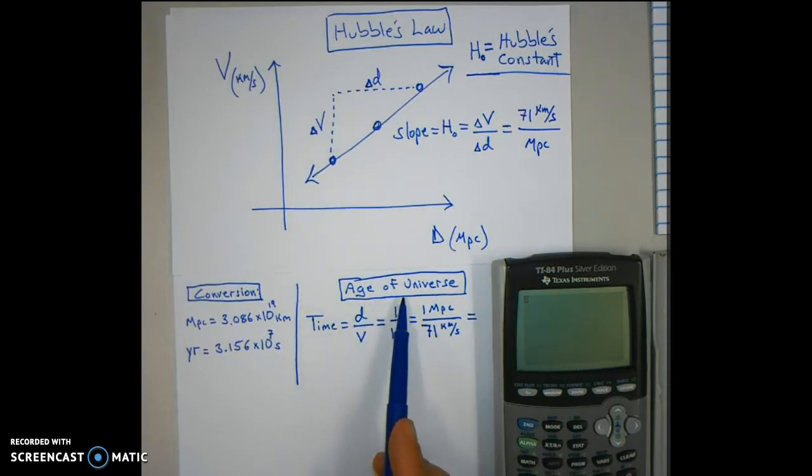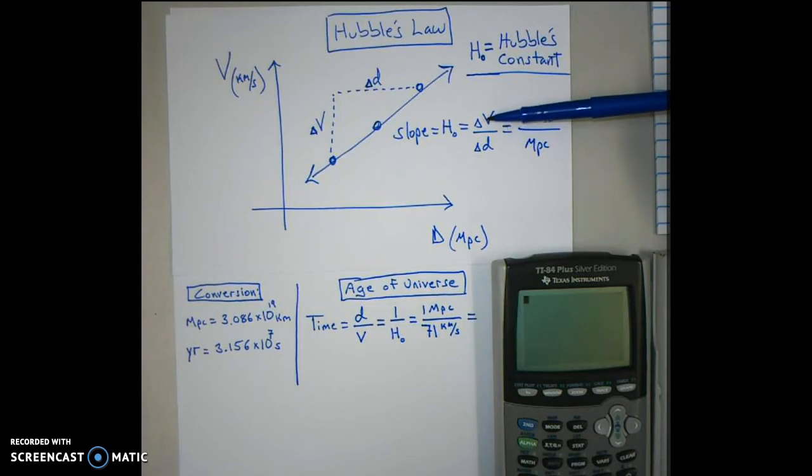Since time is a ratio of the change in distance to change in velocity, that is the reciprocal of the slope, one over Hubble's constant. So since the slope of this line represents change of velocity over distance, we're going to take its reciprocal.